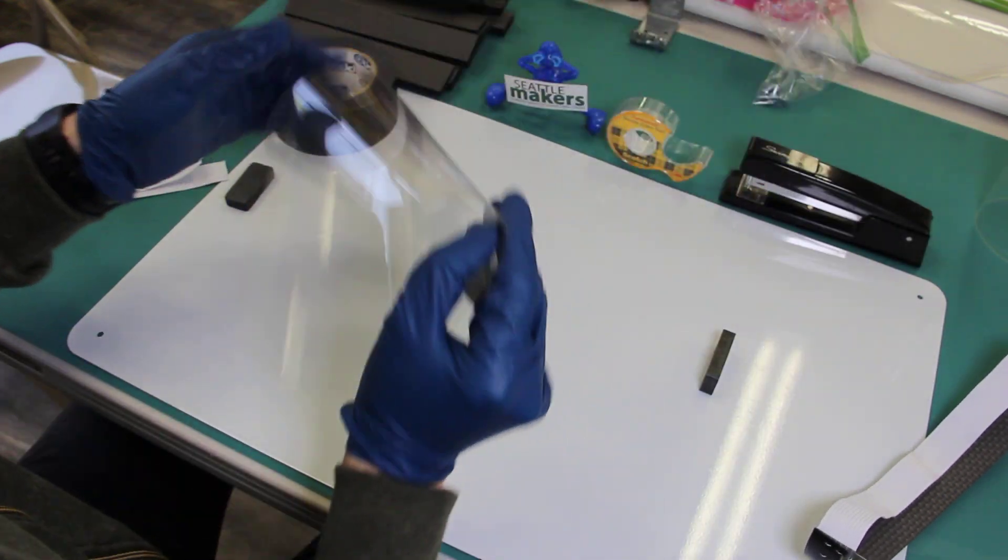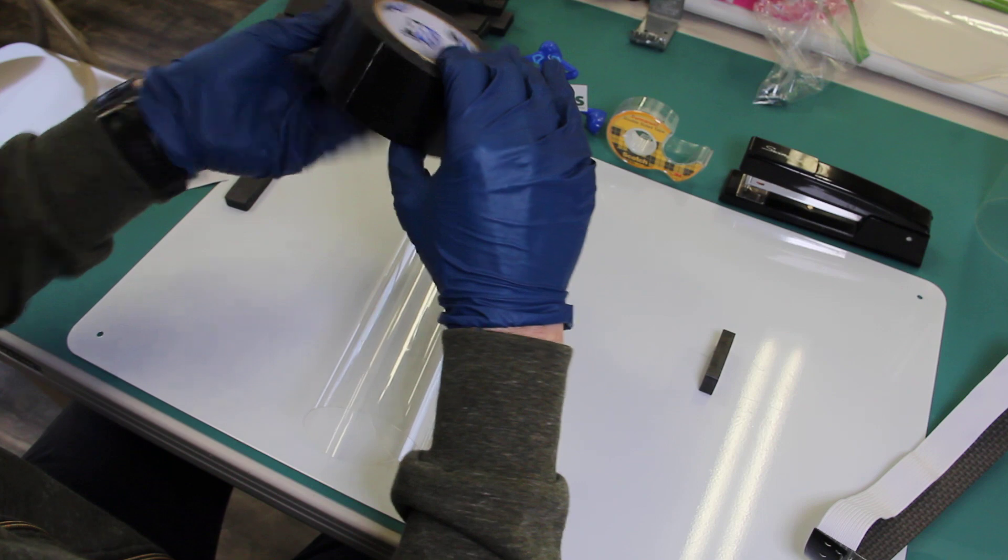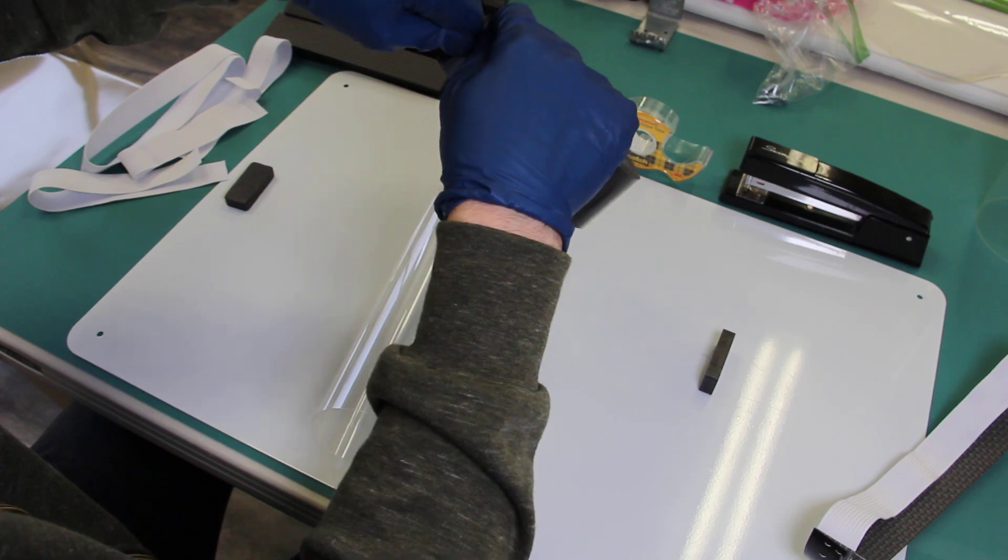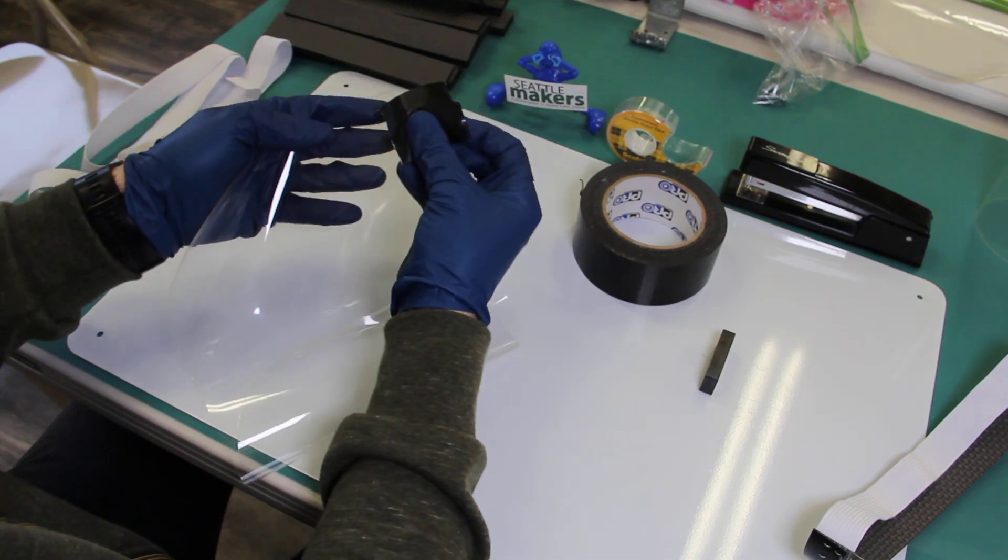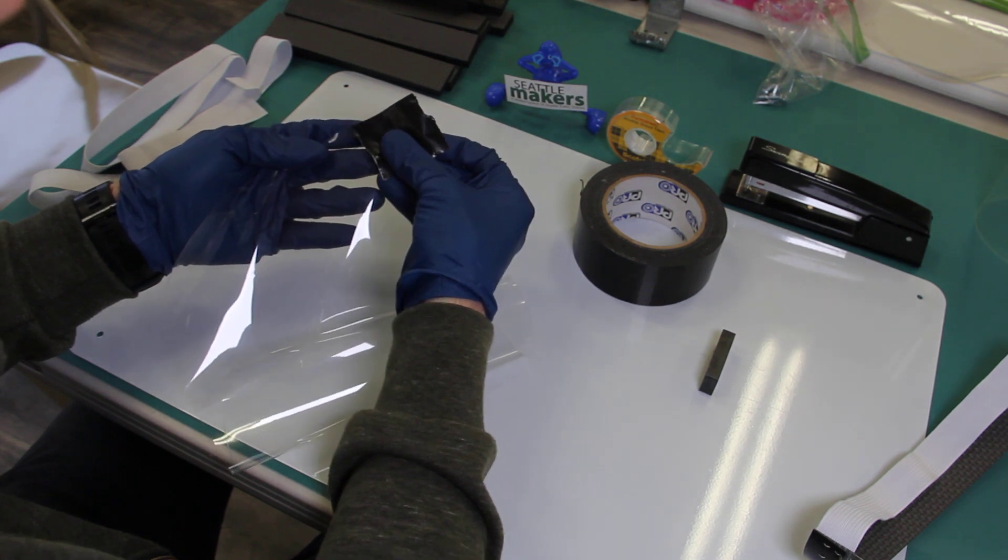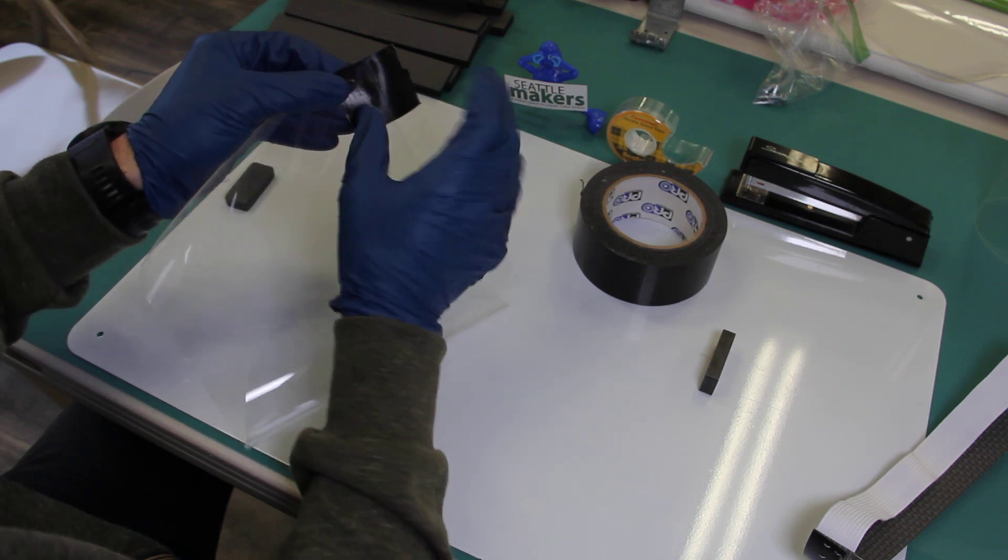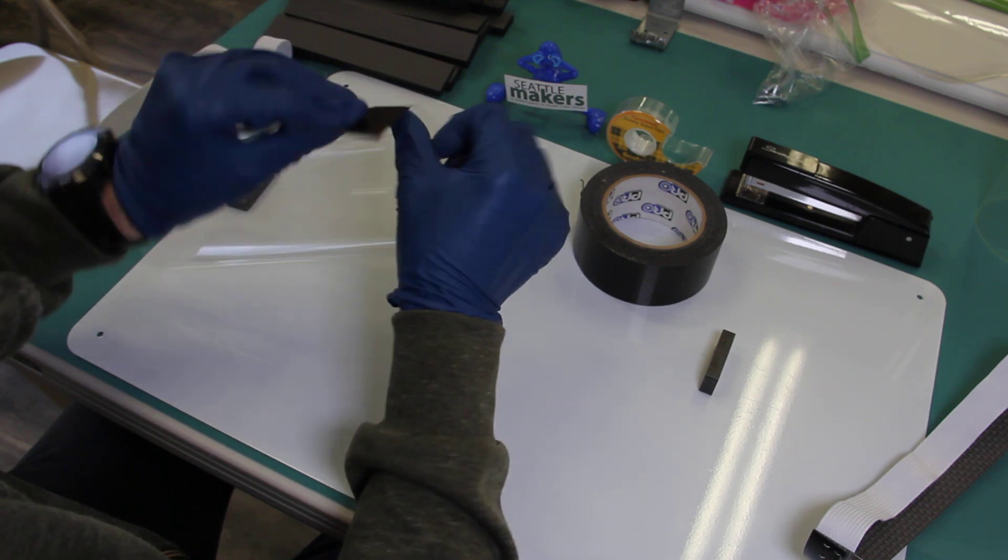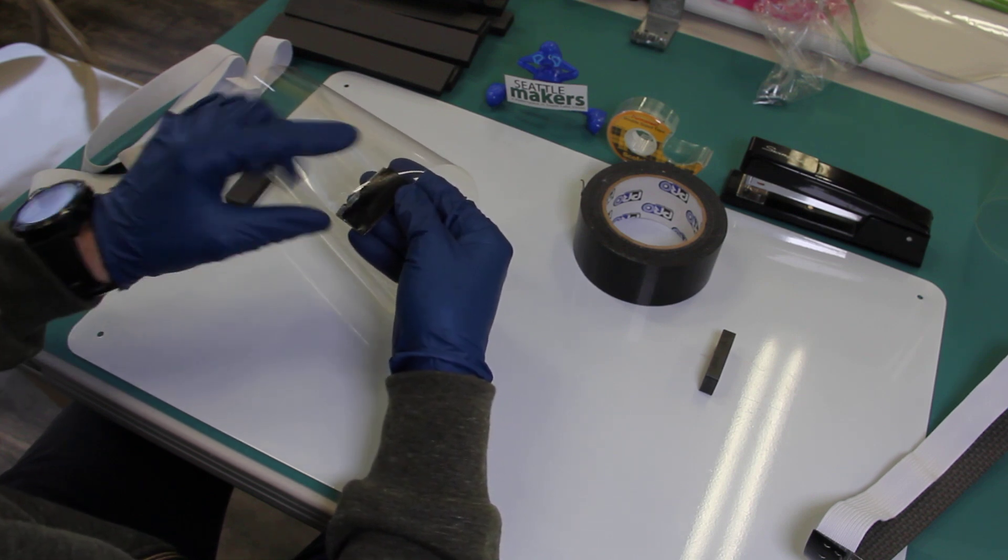First off, we're going to want to reinforce the top corners where the staples go, and to do that we're going to tear off about a square of this duct tape. Take the straight edge along the top left corner, line it up with about half of it sticking above the mask, and this doesn't have to be perfect. We're looking to just have the width of a staple fit in both sides.